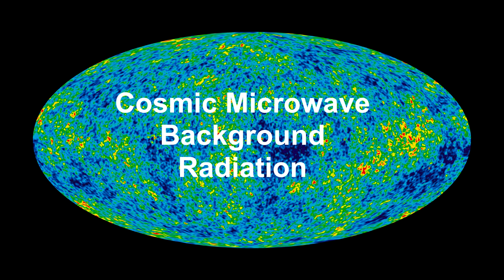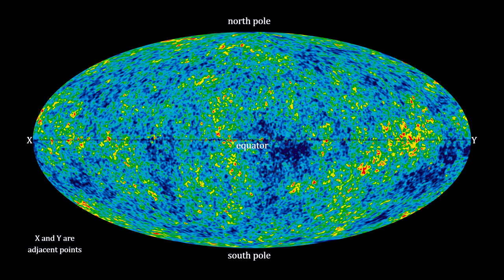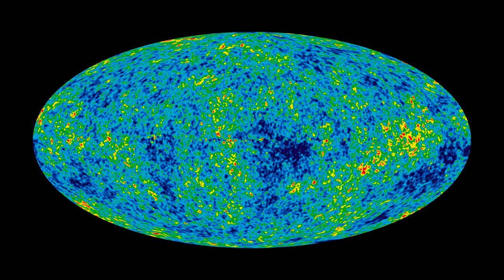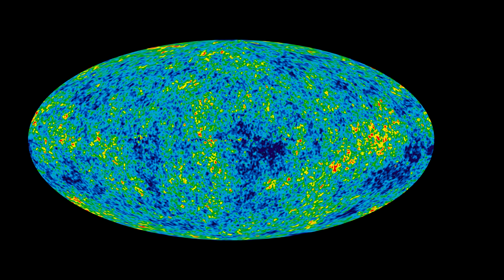Here's a projection of the celestial dome, as seen by the Wilkinson Microwave Anisotropy Probe, factoring out all local and local group motion. The mapping preserved the relative sizes of the surface objects.